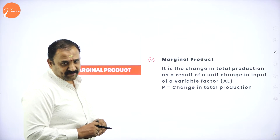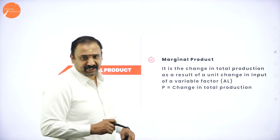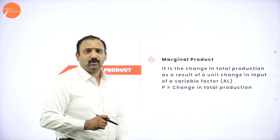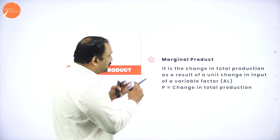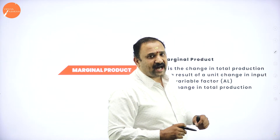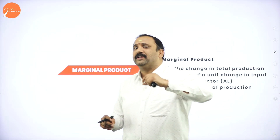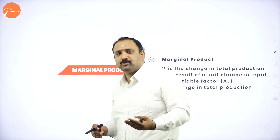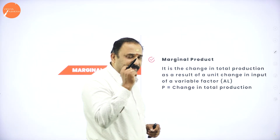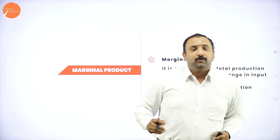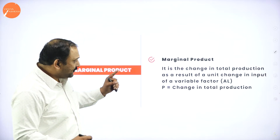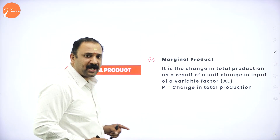The next concept is marginal product. It is the change in production as a result of a unit change in the input variable. Most organizations in the world are never happy with a given output — they always want to produce more. They want production to peak at any given point of time, and when you want to increase production, you need to increase your inputs, which come with a cost factor.